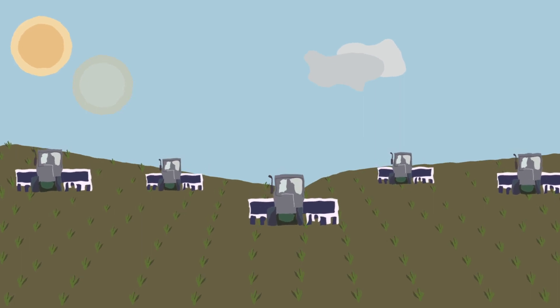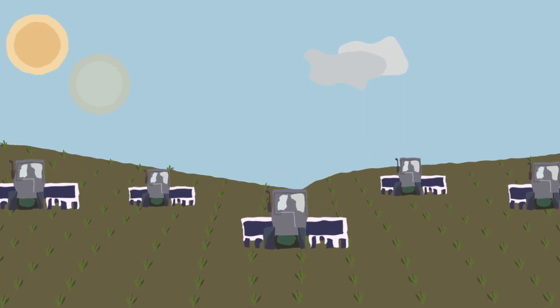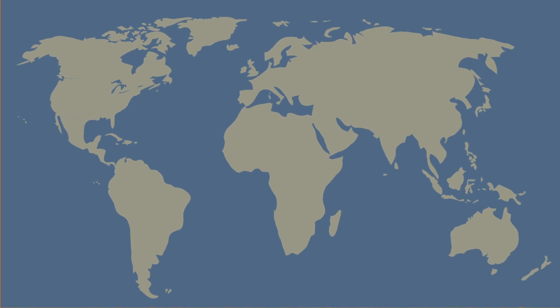Adopting a vegan or plant-based diet would also reduce global farmland use by more than 75%, equivalent to the land mass size of the United States, China, the EU, and Australia combined.